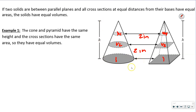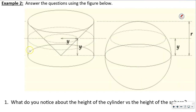So if they are the same height and they have the same area at every level moving up the object, then the volumes of the two figures have to be the same. Now we're going to answer questions about the figures below. We have a cylinder here with a cone in it, and then we have a sphere.